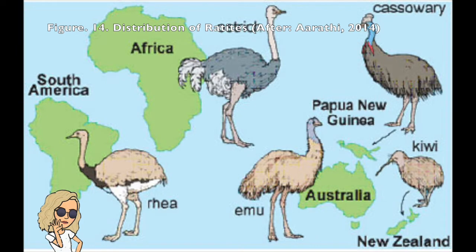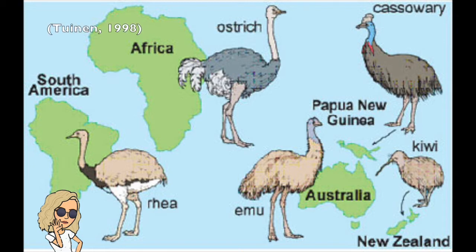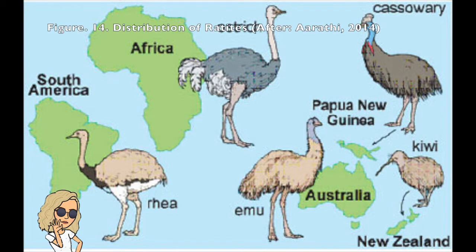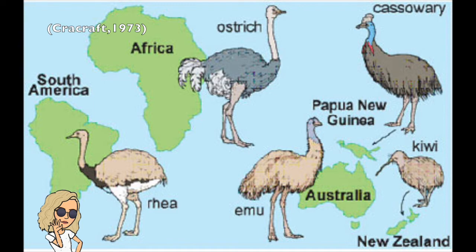Ratites are native to the Southern Hemisphere. Two species of ostrich, Struthio, are found in Africa and formerly Asia. The emu, Dromaius, is found in Australia. Three species of cassowaries, Casuarius, are found in New Guinea and also northeast Australia. Three species of kiwi, Apteryx, are found in New Zealand. And two species of rheas are found in South America. The geographical distribution of these ratites can help us determine ideas of how they evolved and how they became more diverse.